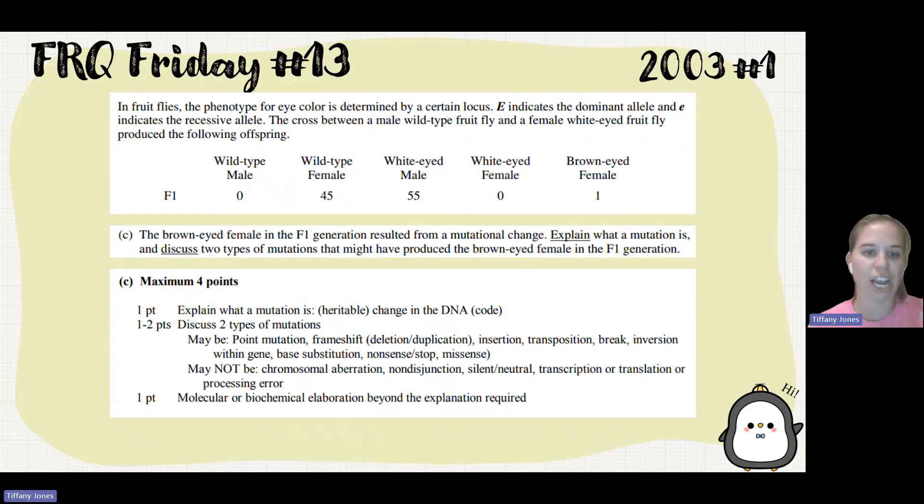So the different mutations we can have would be point mutations where there's a change in a single point. Frameshift mutation where there is a deletion or insertion that causes the shifting of that reading frame or the reading of the three codons at once. Insertion, transposition where something moves to another spot. Inversion where it comes out, rotates, comes back in. Base substitution where one base is substituted for another base. Nonsense or a stop mutation or a missense mutation. Nonsense is where we're going to see a codon that gets switched out from an amino acid to a codon that codes for a stop codon. Missense is going to be one that codes for an amino acid, codes for a different amino acid.